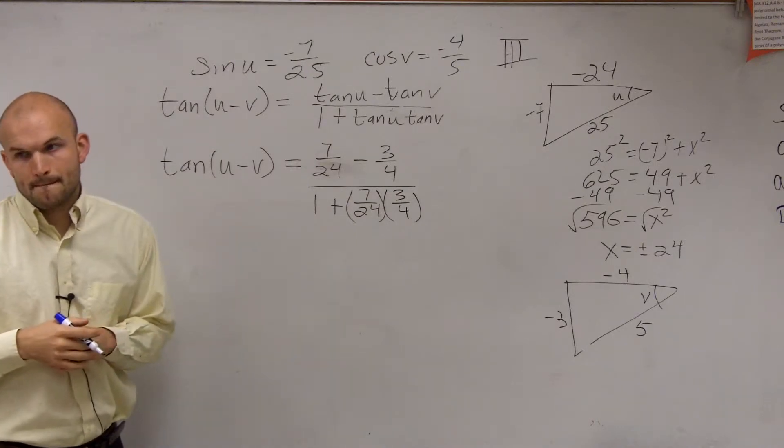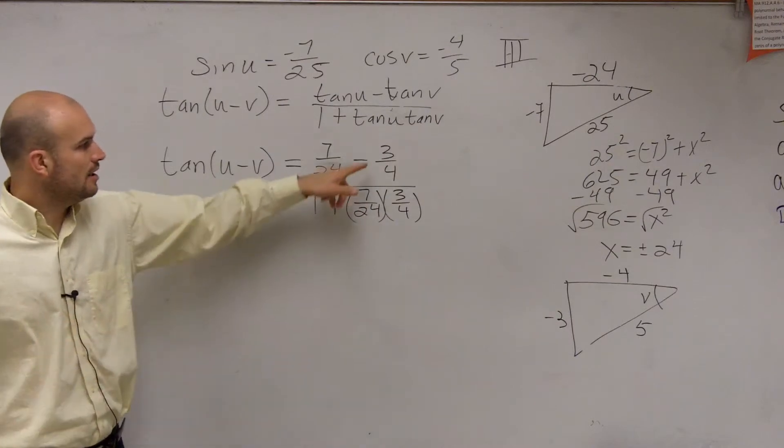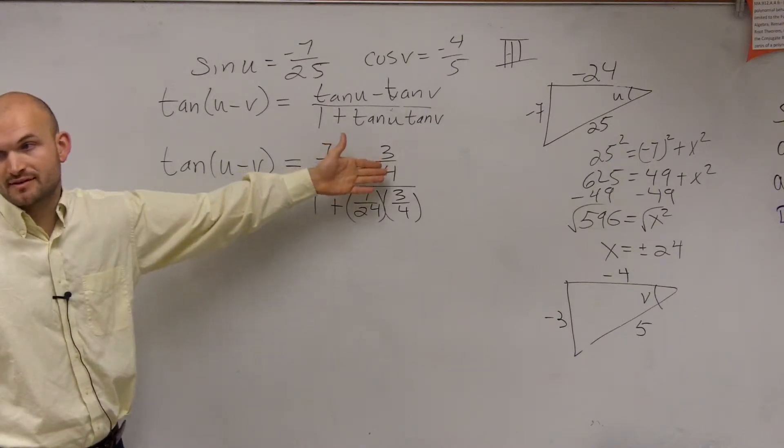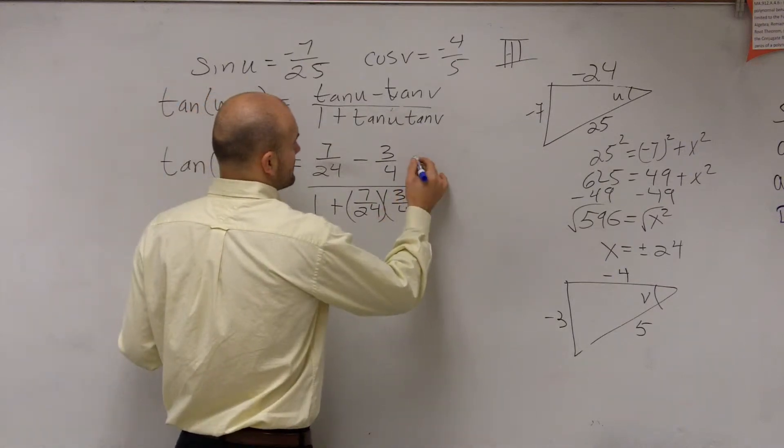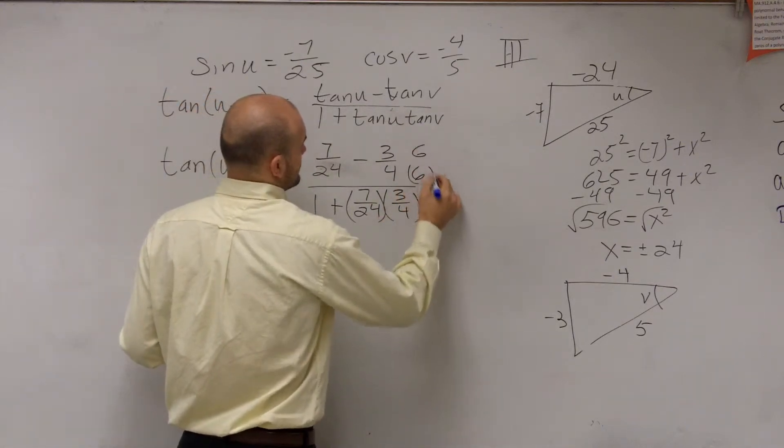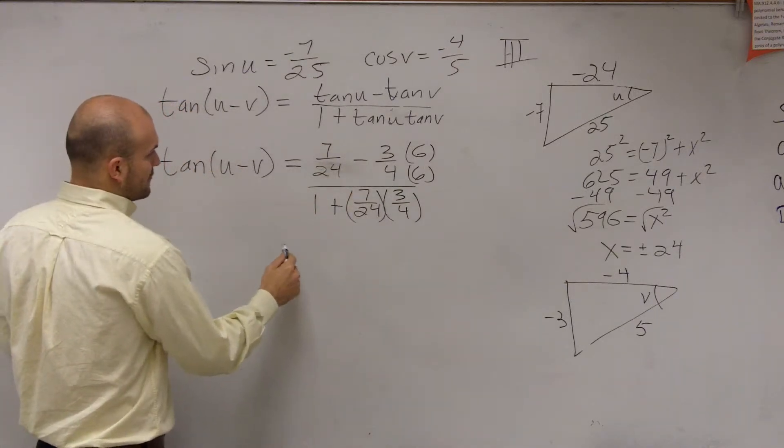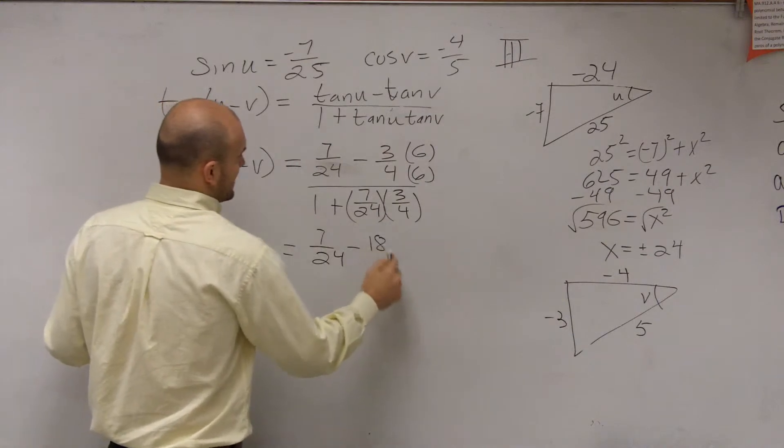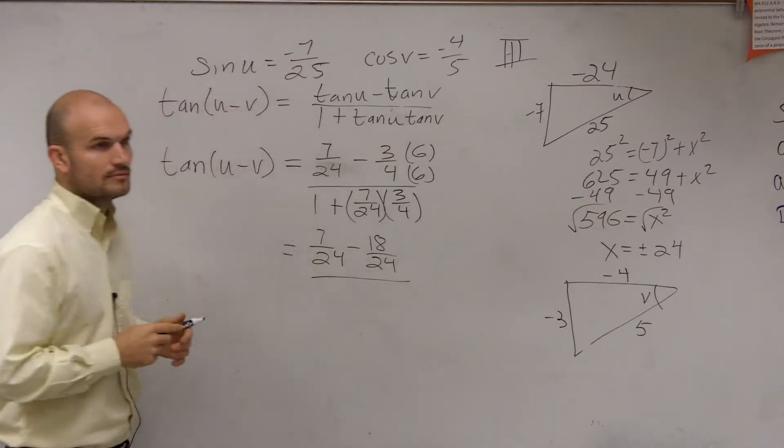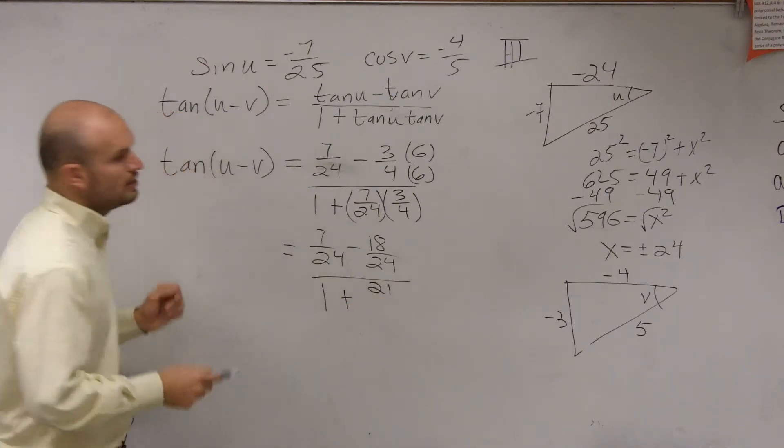So what we need to do is we can multiply this on the denominator. To subtract these, we know we have to get them to be common denominators. So I can multiply this by 6 over 6. And here, let's multiply this out. So therefore, I'm going to get 7 over 24 minus 18 over 24, divided by 1 plus 21 over 96.